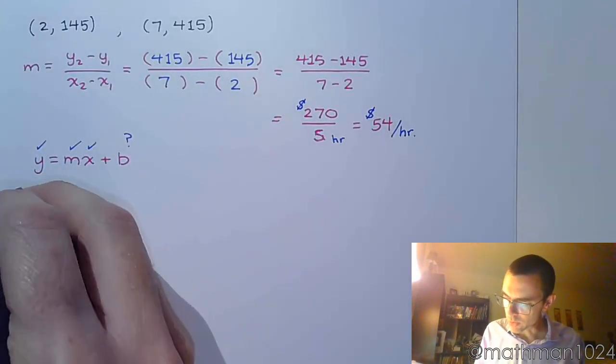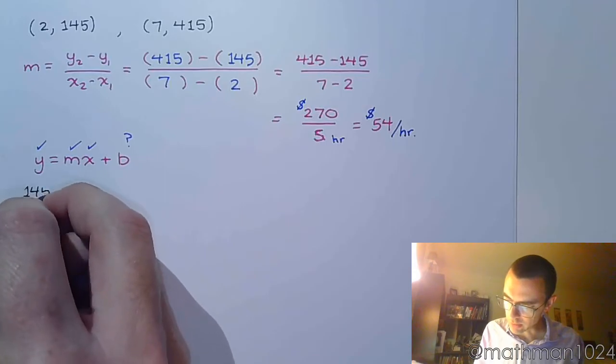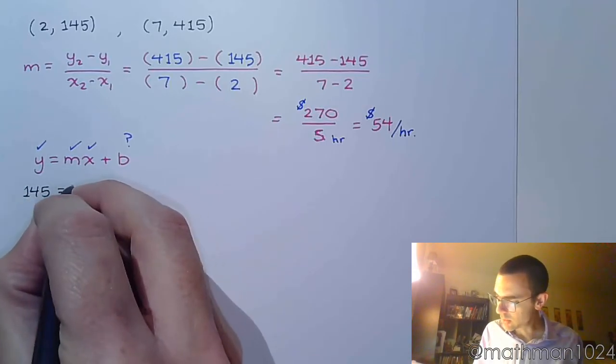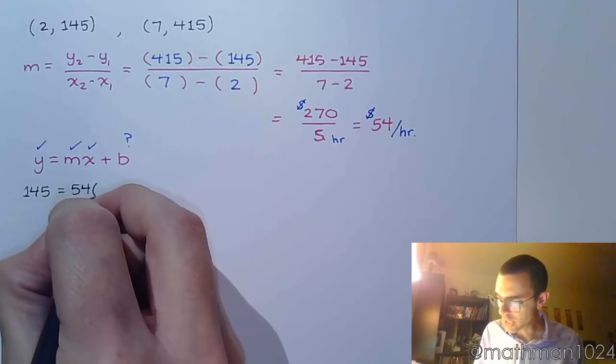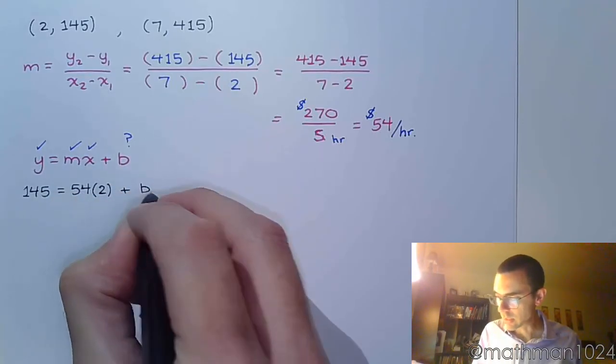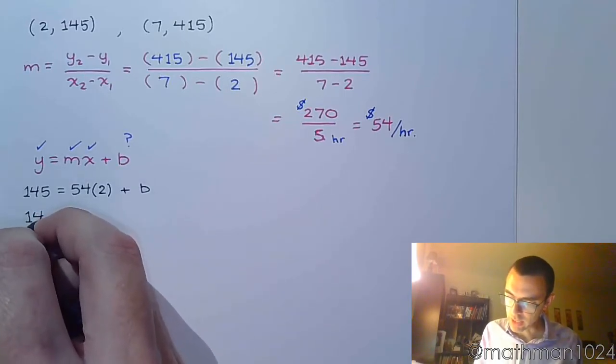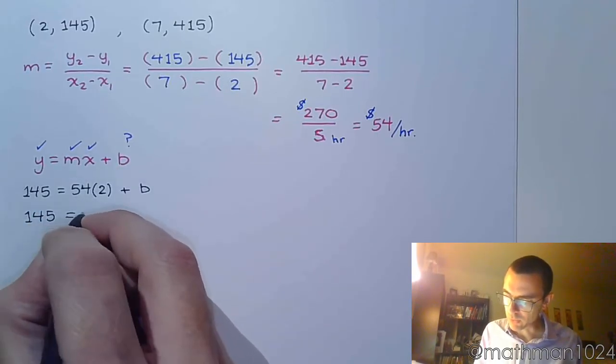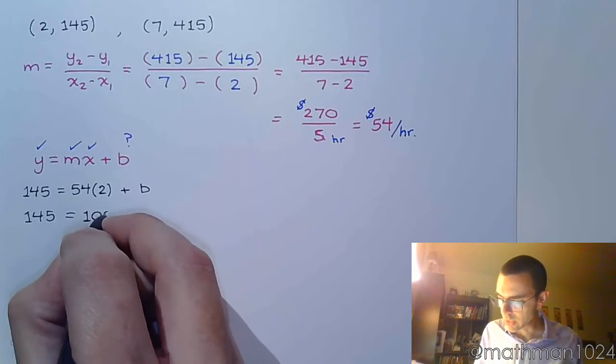So, my y value is 145, slope is 54, and my x value for this order pair is 2. All right, nice, simple math. 54 times 2 is 108.